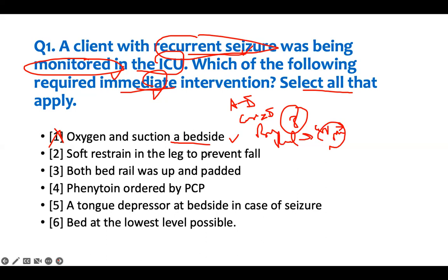'Soft restraint on the leg to prevent fall.' You should never restrain a seizure patient — absolutely never. So this one needs intervention. 'Both bedrails were raised and padded.' Yes — you raise both rails and pad them. This is not a true restraint; you're protecting the patient. So this is correct and does not need intervention.